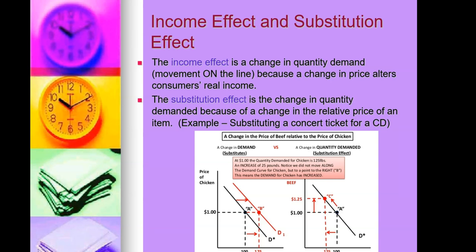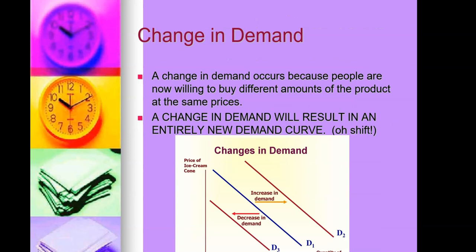Notice we did not move along the demand curve for chicken but to a point to the right — the demand curve moved to the right, which is D1. A change in demand occurs because people are now willing to buy different amounts of the product at the same price. A change in demand results in an entirely new demand curve. If there's a decrease in demand, the curve moves left; if there's an increase, it moves right.